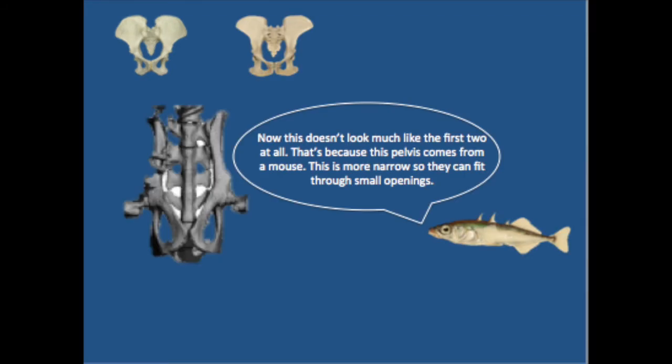Now, this doesn't look much like the first two at all. That's because this pelvis comes from a mouse. This is more narrow so that they can fit through small openings.